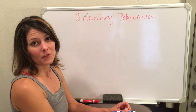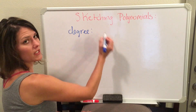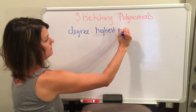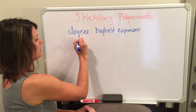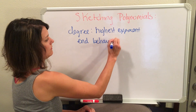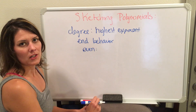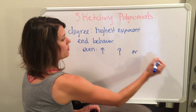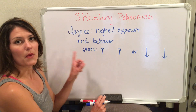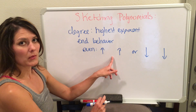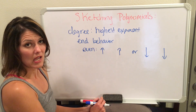There are three things that you need to know. The first thing is your degree. Your degree is your highest exponent, and the reason you need to know your degree is because it tells you your end behavior. If you have an even degree, your end behavior can either go both sides up or both sides going down. If you have a positive leading coefficient, both ends go up towards infinity; if you have a negative leading coefficient, both ends go down towards negative infinity.